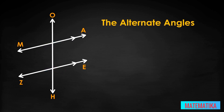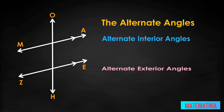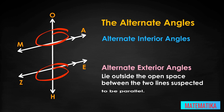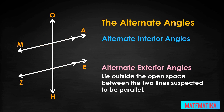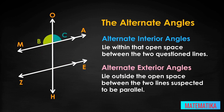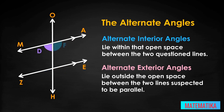Alternate angles as a group subdivide into alternate interior angles and alternate exterior angles. Exterior angles lie outside the open space between the two lines suspected to be parallel. Interior angles lie within that open space between the two question lines. In our drawing, angle B, angle C, angle K, and angle L are exterior angles. Angle D, angle F, angle G, and angle J are the four interior angles.